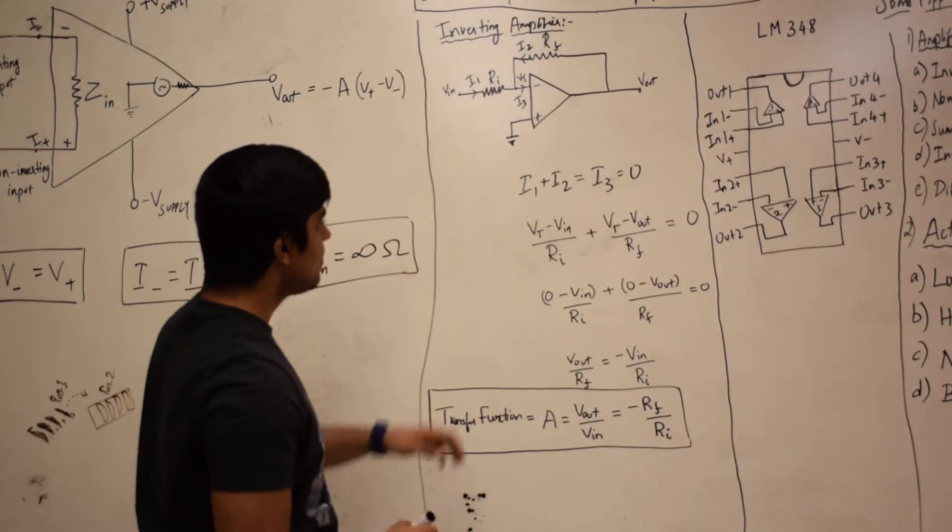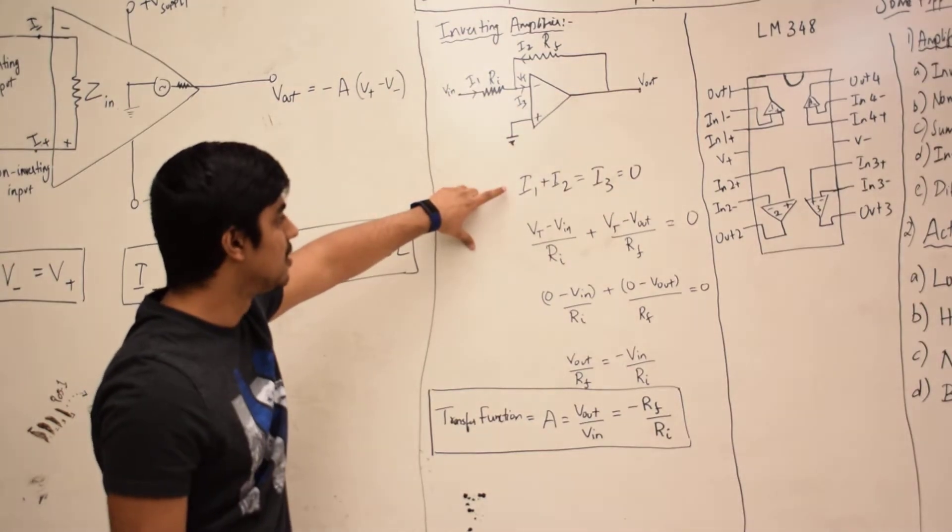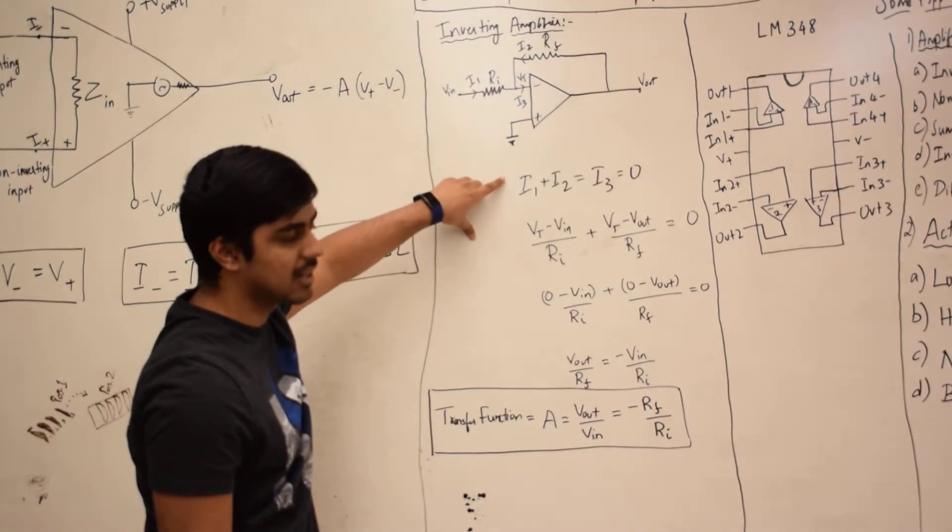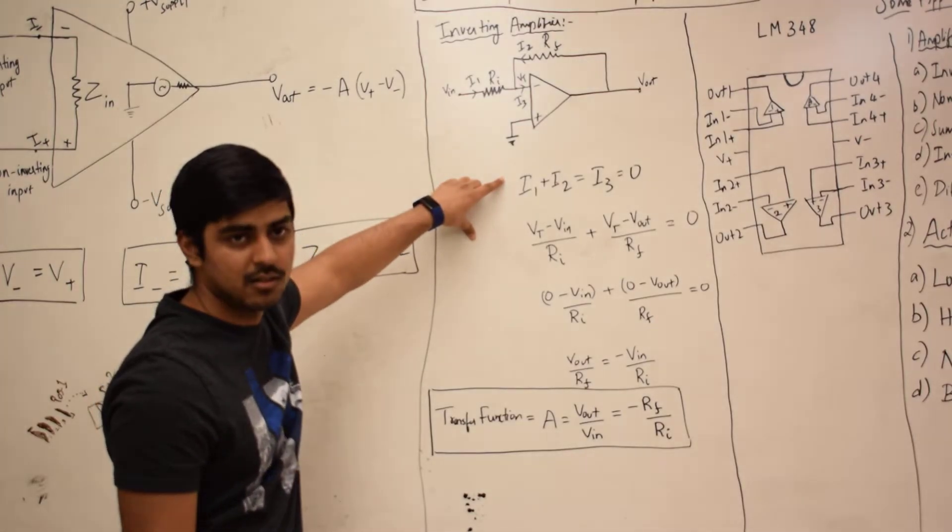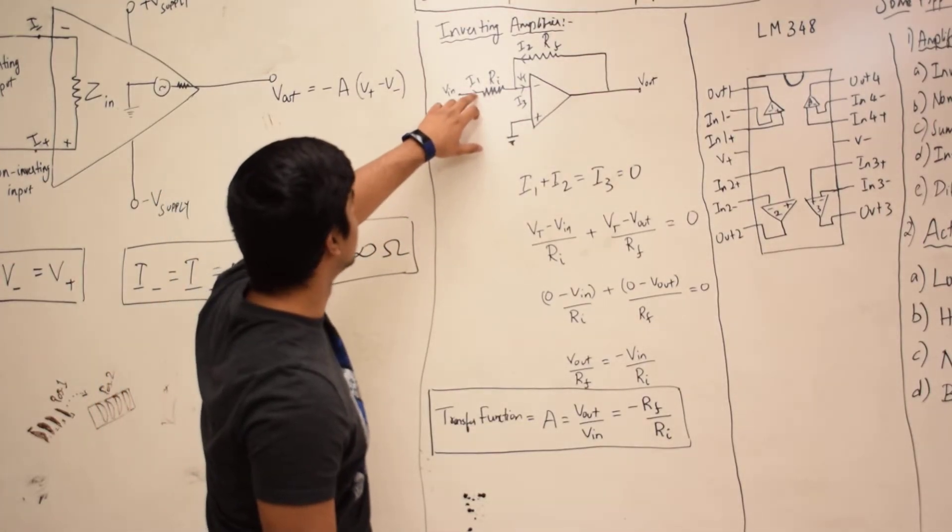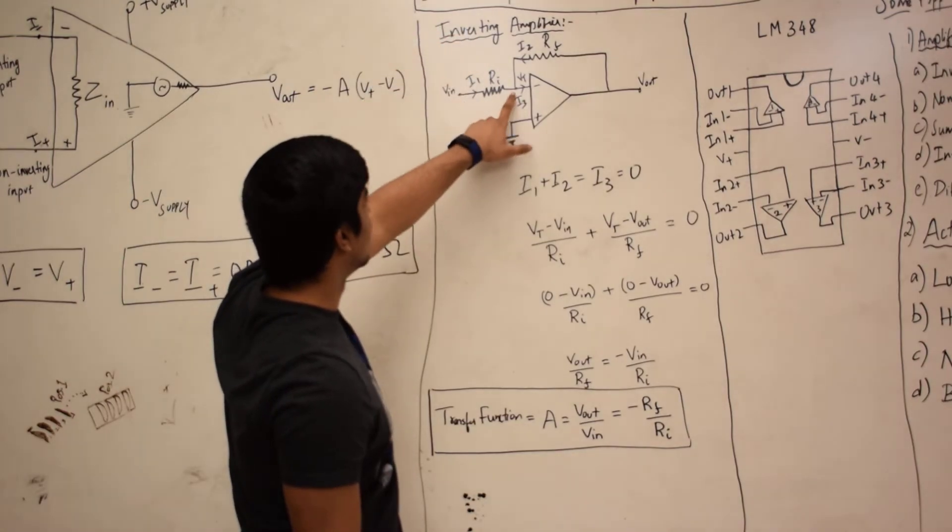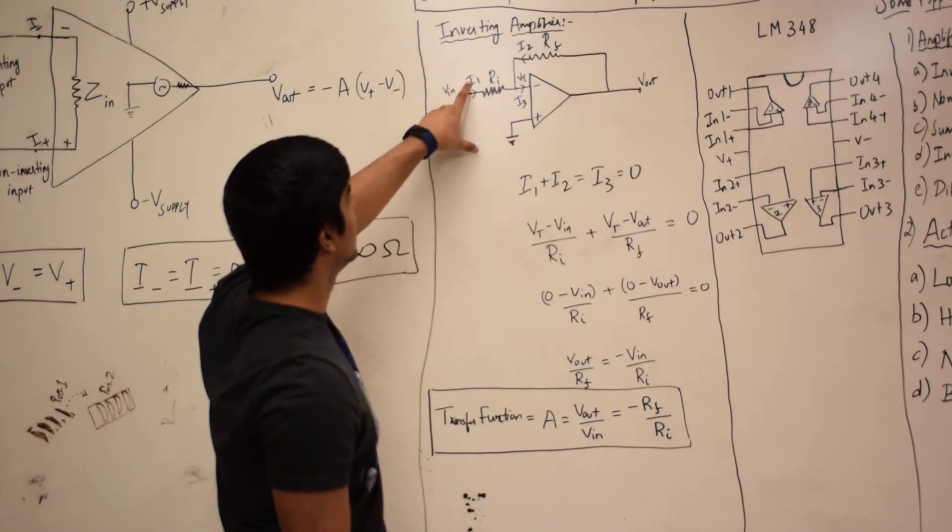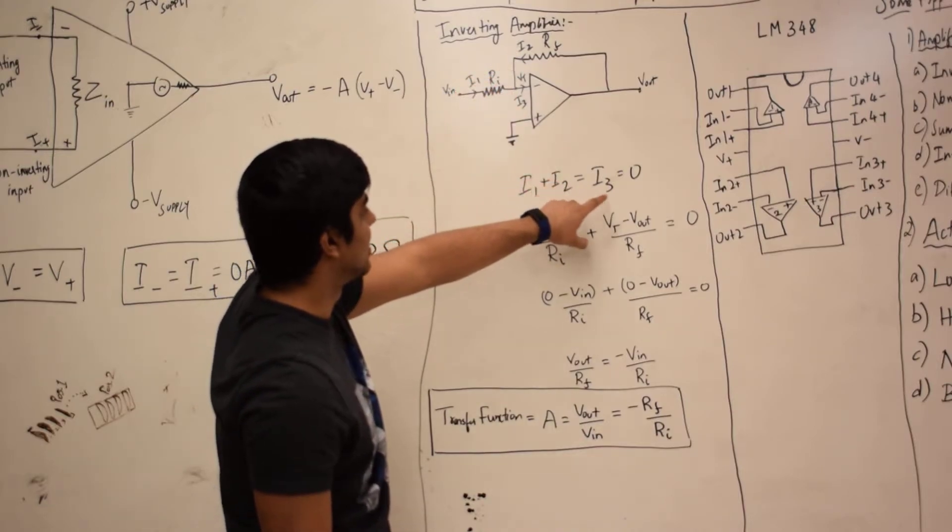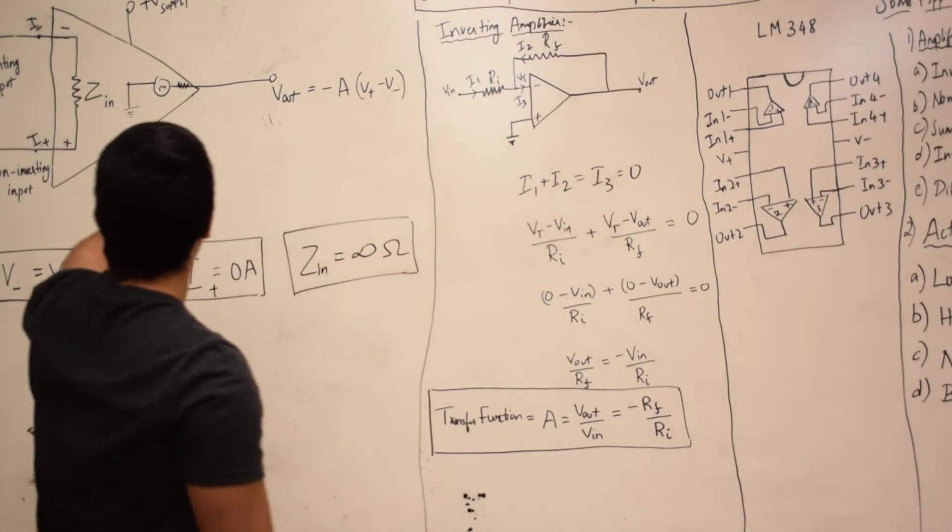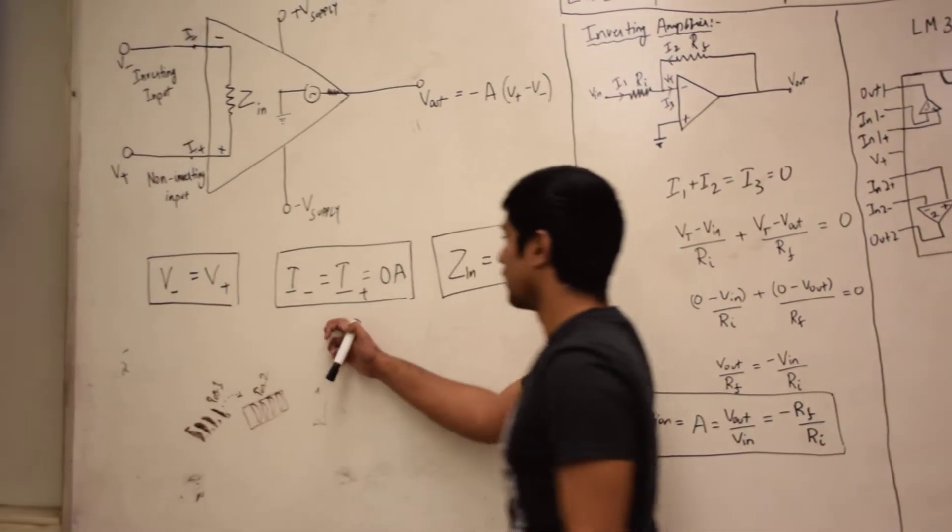From Kirchhoff's current law, you know that the sum of all currents at a junction equals zero. Here, you can see that the current at this junction is equal to zero.